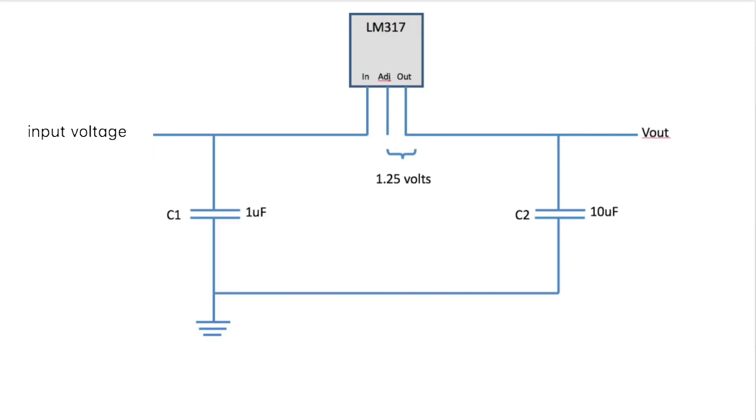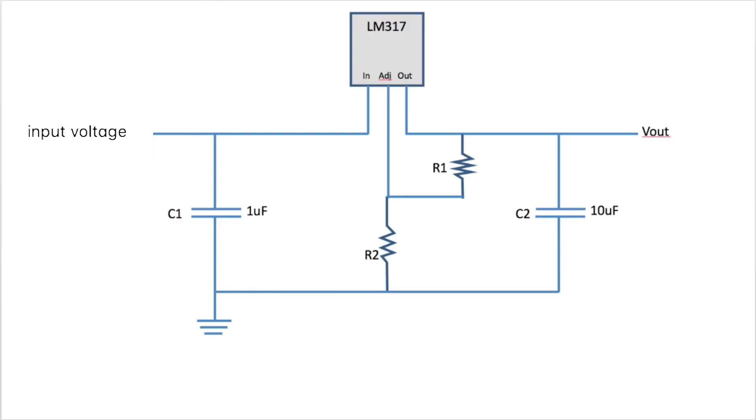First, we'll create a ground for our circuit and hold the voltage with capacitors. Then if we add two resistors like this, we create a voltage divider. And since this is a voltage divider, we know that the voltages across the resistors is proportional to the resistor values.